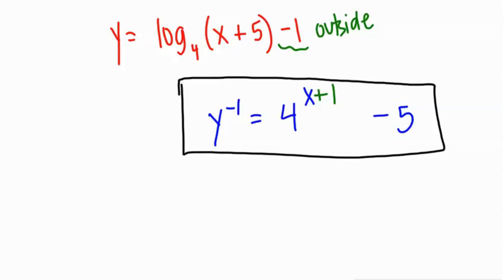So here's our inside, right? So this is inside our function. So the plus 5 becomes a minus 5 outside the function. And then minus 1 outside the function is going to become plus 1 inside the function. And there you have it. y inverse equals 4 raised to the x plus 1 minus 5.